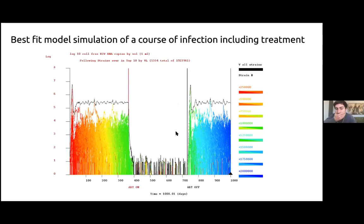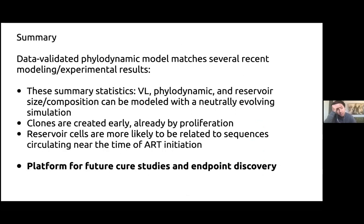Summary: the data-validated model matches many of the modeling and experimental results discussed. Clones are created early and are already made by proliferation; reservoir cells are more likely to be related to sequences circulating near the time of ART initiation. I'm excited about this as a platform for cure studies and endpoint discovery in the next round of modeling.